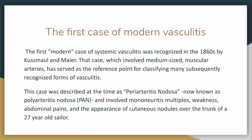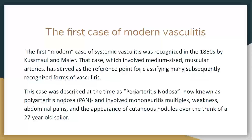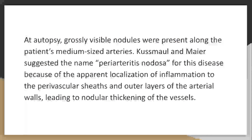This was actually in the 1860s by Kussmaul and Maier. It was a sailor who had mononeuritis multiplex — which if you're not familiar with the term, means these scattered neurons, numbness down a leg or something. There were nodules in the medium-sized arteries and they wanted to call it initially periarteritis nodosa because it looked like there was localized inflammation to the perivascular area, which led to nodular changes in the vessels.